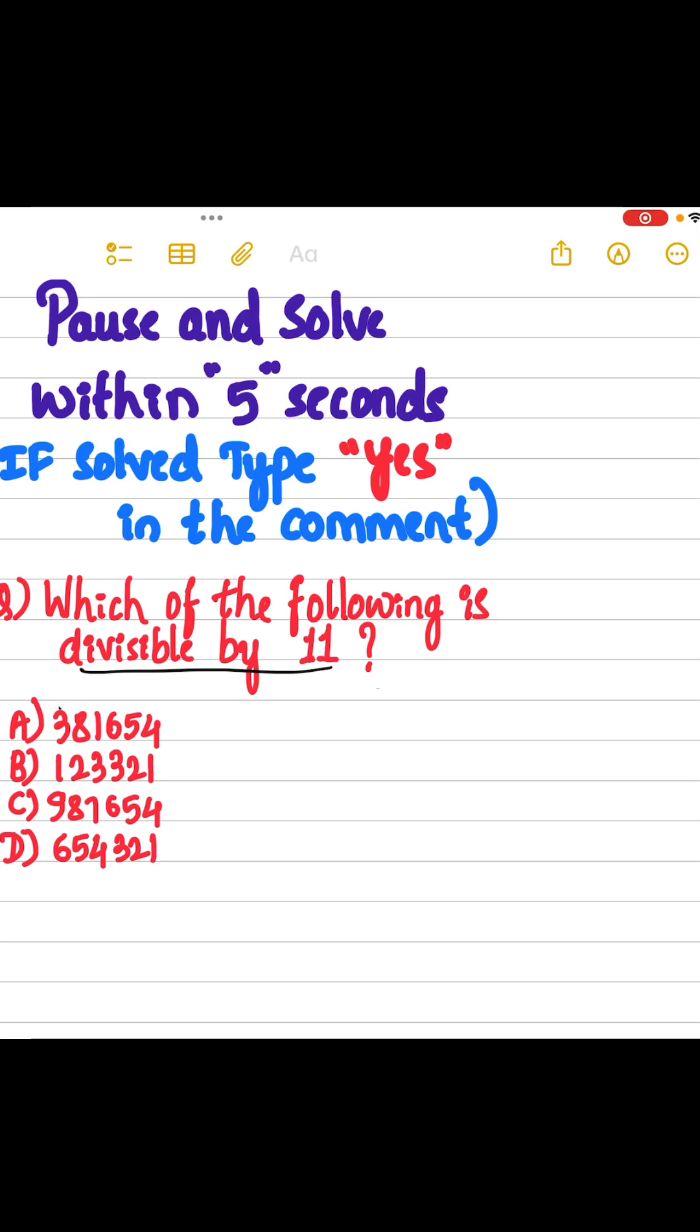See the first option, 3 plus 1 plus 5 minus 8 plus 6 plus 4. So 9 minus 18, it is minus 9. So it is not divisible by 11.